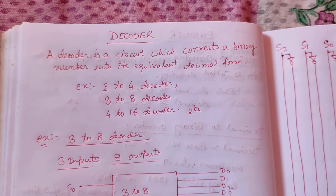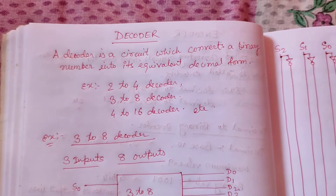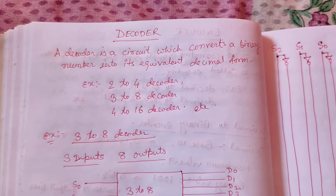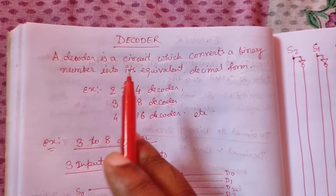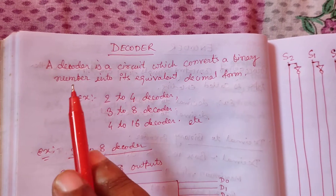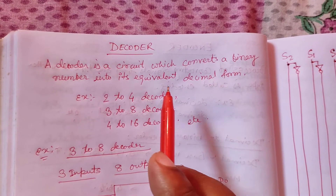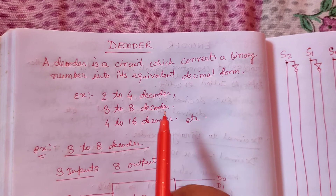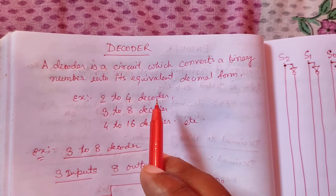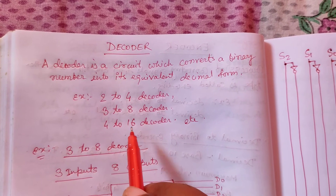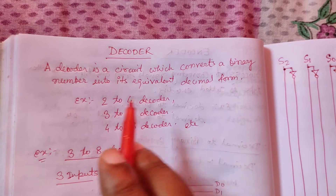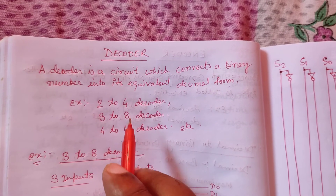Today's topic is the decoder. A decoder is a circuit which converts a binary number into its equivalent decimal form. Examples include 2-to-4 decoder, 3-to-8 decoder, and 4-to-16 decoder.